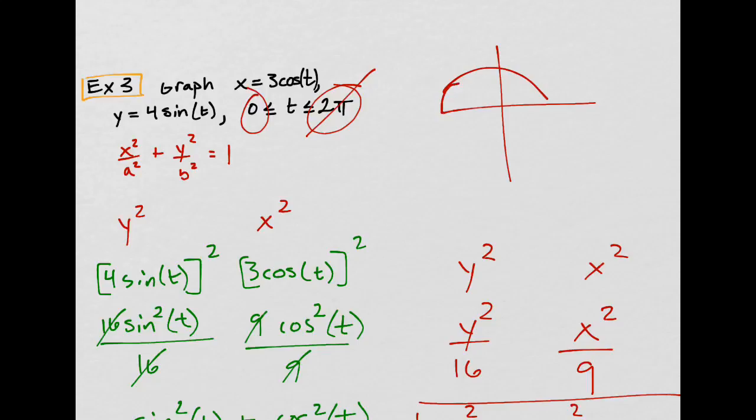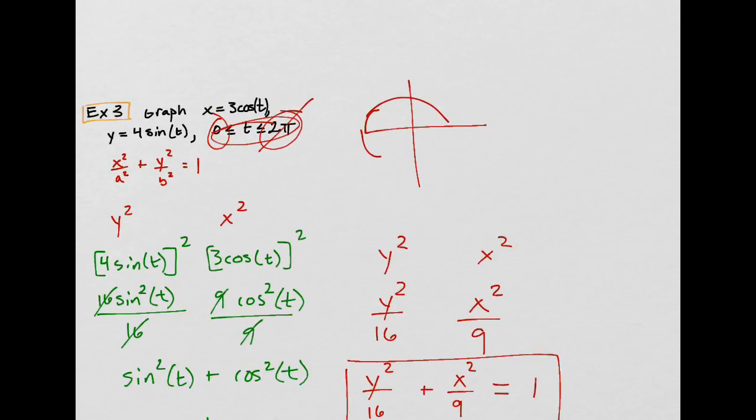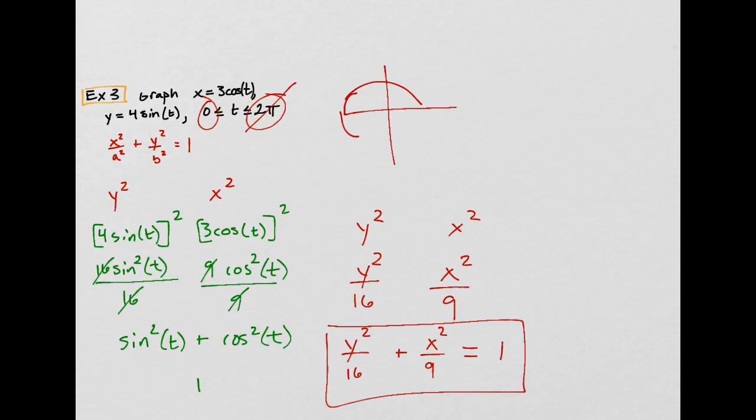I don't know, I'm just making stuff up. But you can restrict this so you get partial ellipses, which you can't really do with Cartesian coordinates. So that's one advantage. You can get partial graphs, and it's kind of cool.